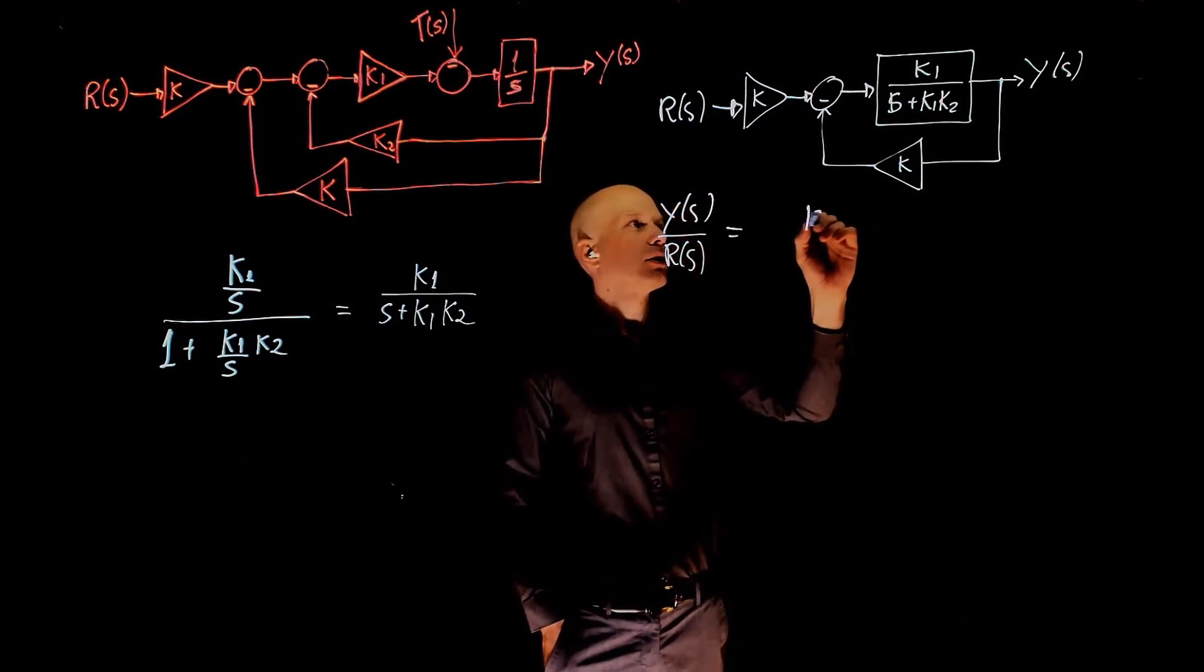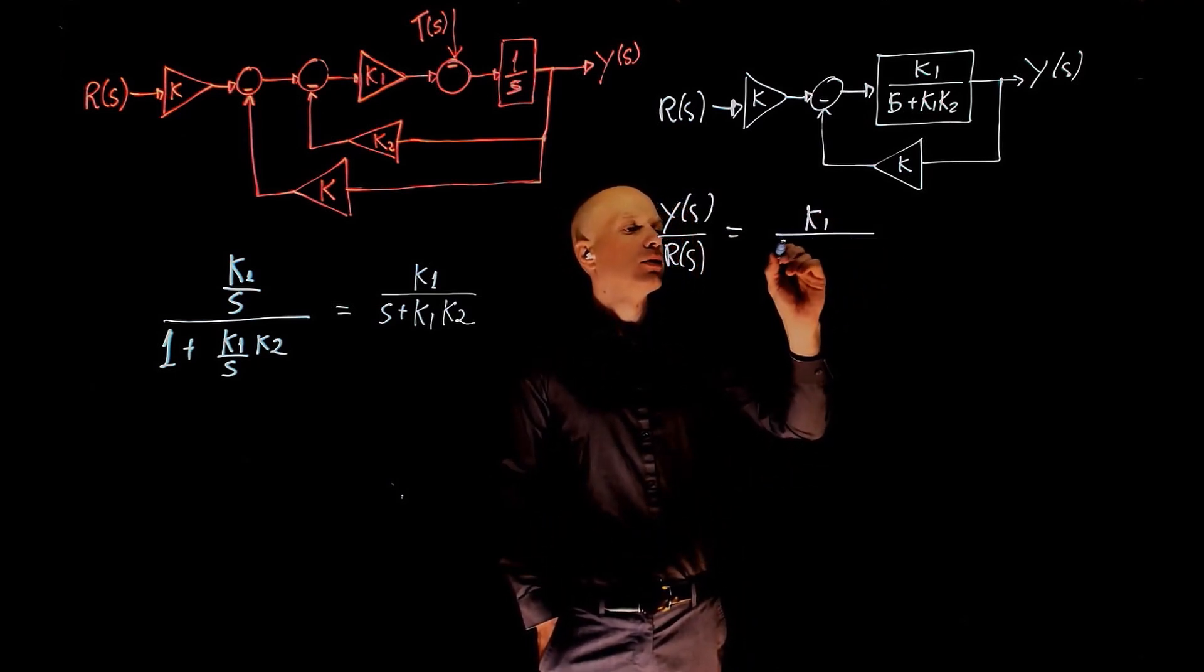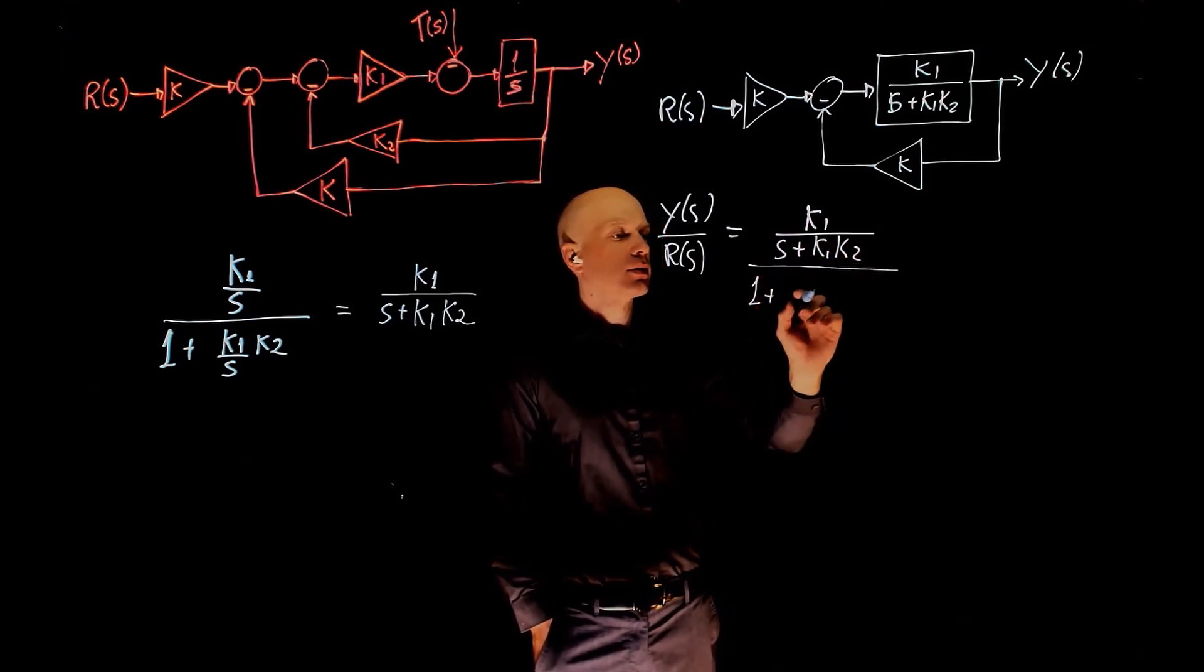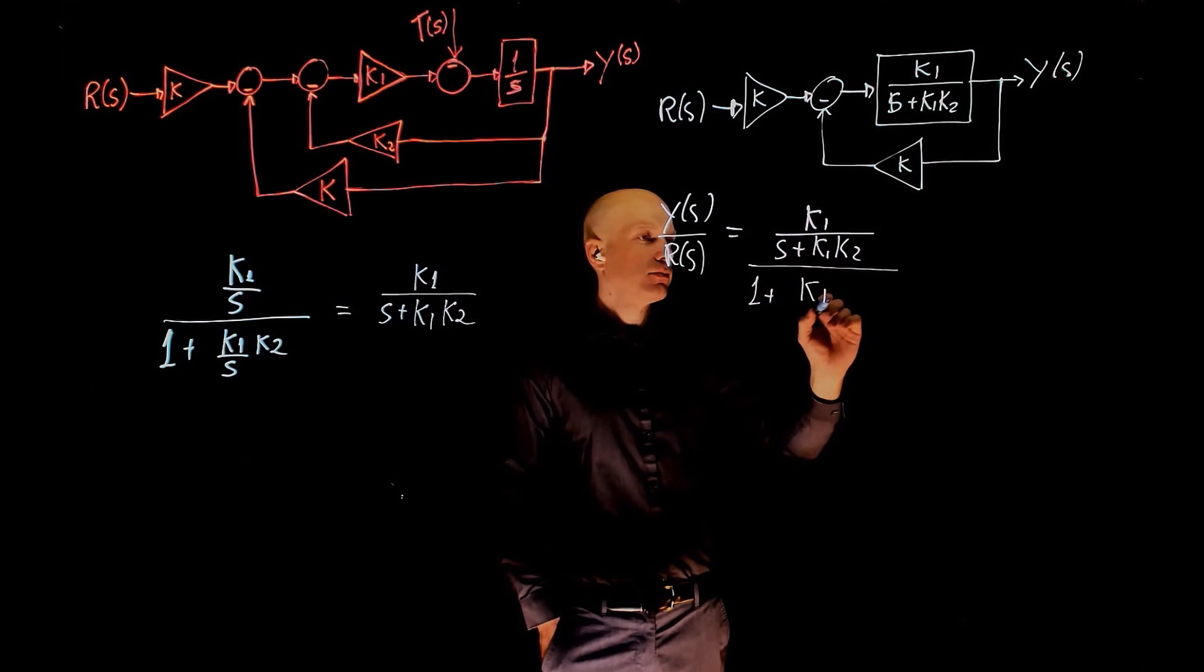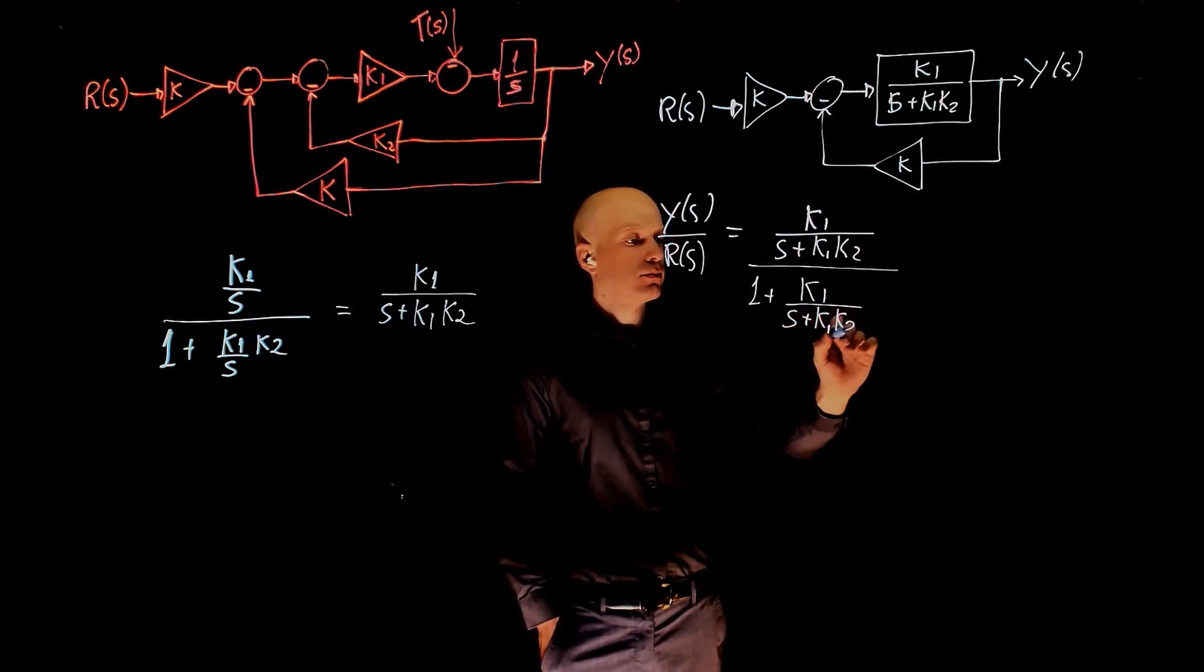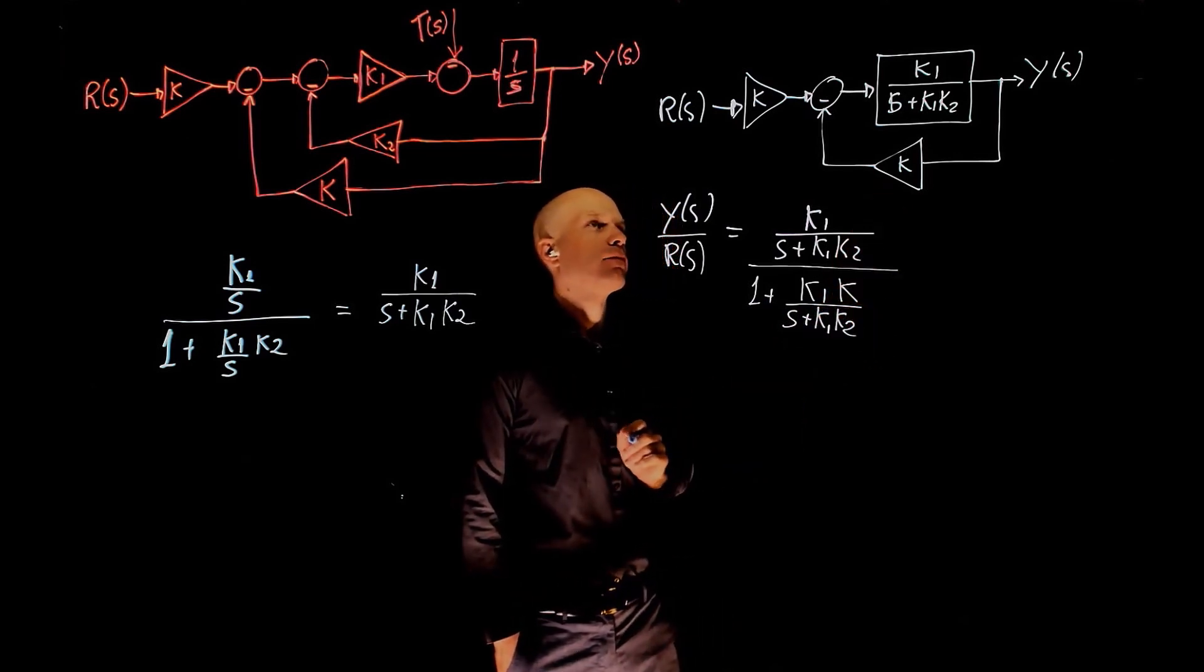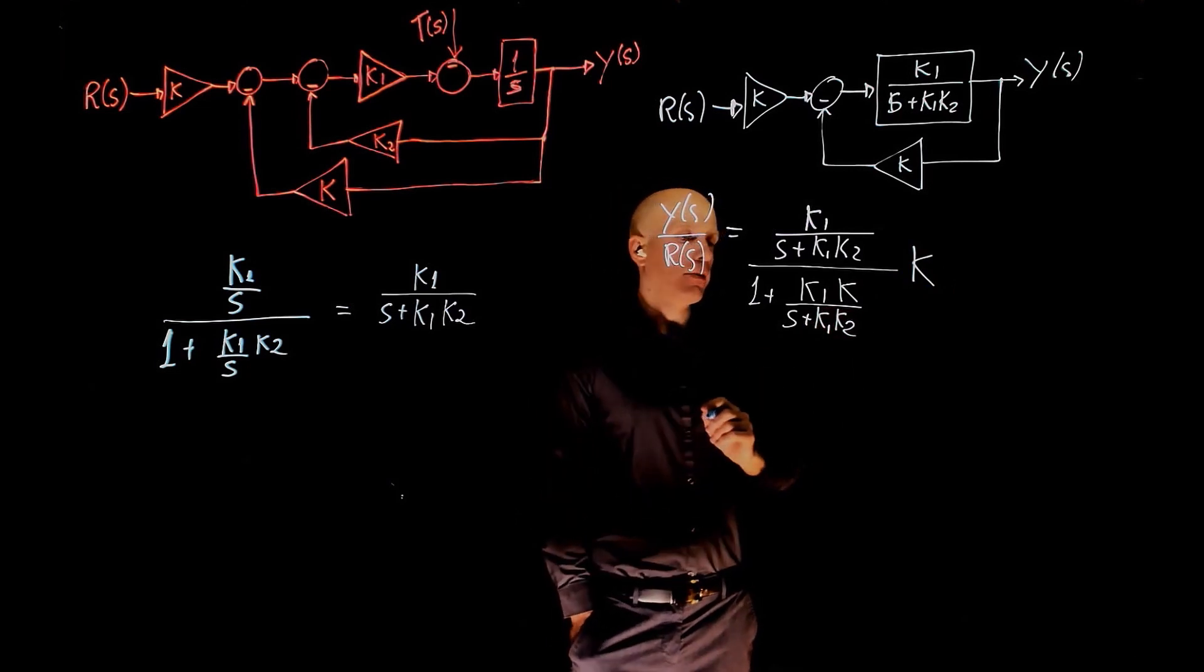That becomes the loop function k1 divided by 1 plus the loop function again times the feedback function k, and this is all multiplied by k.